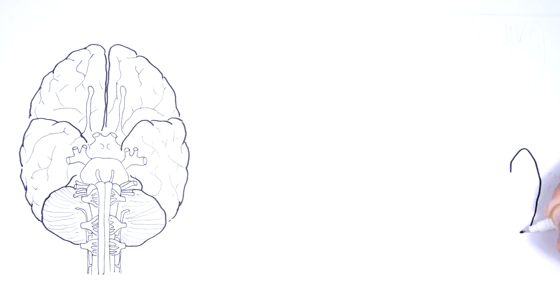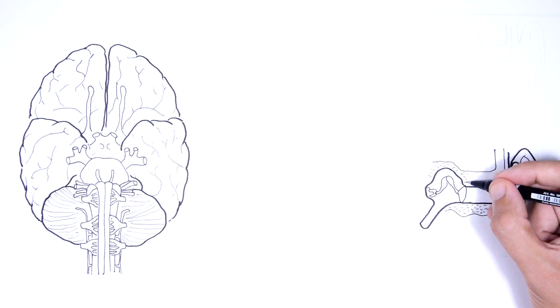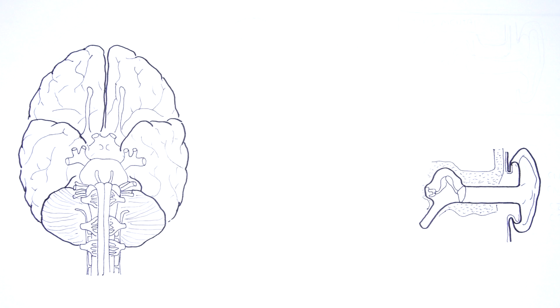The ear is a structure that can be divided into three parts: the inner, middle and external ear. Otalgia usually describes the painful ear caused by pathology in the external and middle ear.